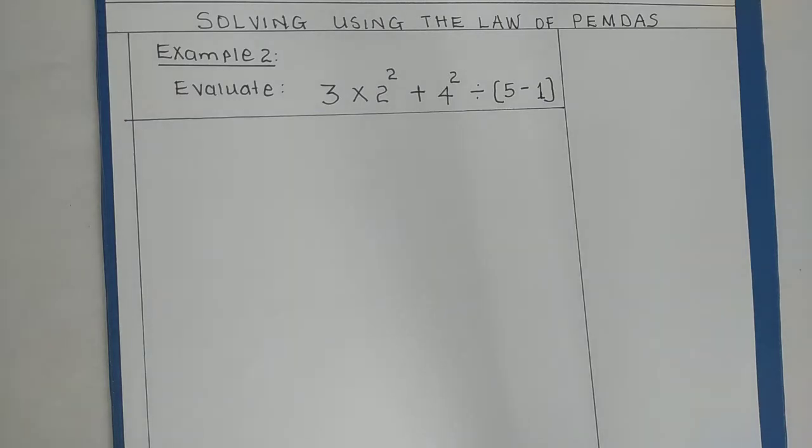Example: evaluate 3 times 2 to the power of 2 plus 4 squared divided by 5 minus 1 in brackets. So, this is what we are going to do.